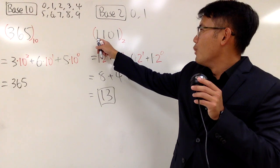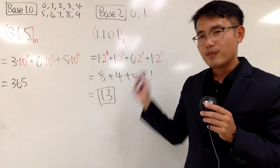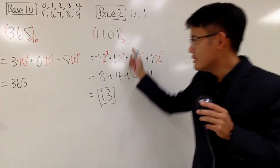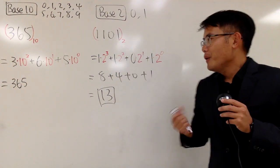So, as you guys can see, 1, 1, 0, 1 in base 2 is, of course, smaller than 365 in base 10. Because this right here, the value is only 13.